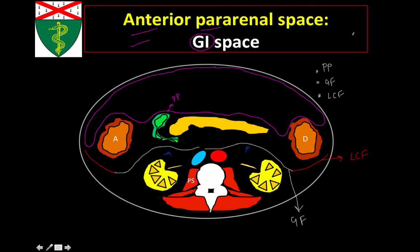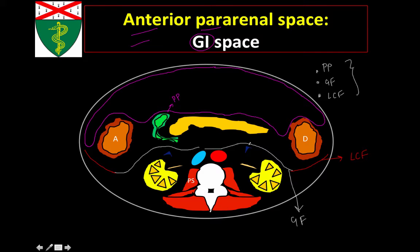Now that we have these fascial layers drawn out, we can delineate the anterior pararenal space: anteriorly it is delineated by the posterior layer of the parietal peritoneum, posteriorly by Gerota's fascia drawn in white, and laterally by the lateral conal fascia drawn in red. It contains a whole bunch of GI organs — the ascending and descending colon, the retroperitoneal portions of the duodenum (the second, third, and fourth portions), as well as the vast majority of the pancreas. In between, there's also some fat and vessels.